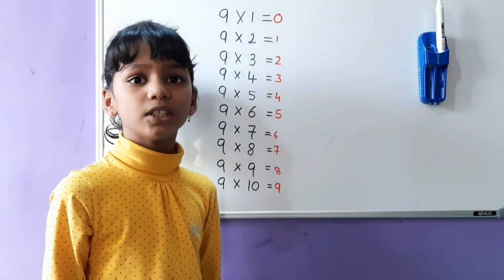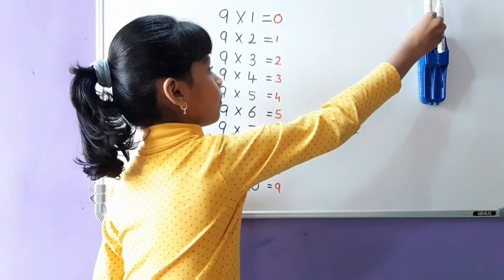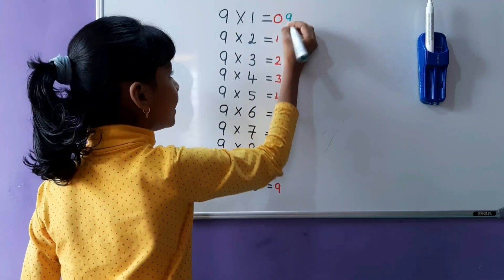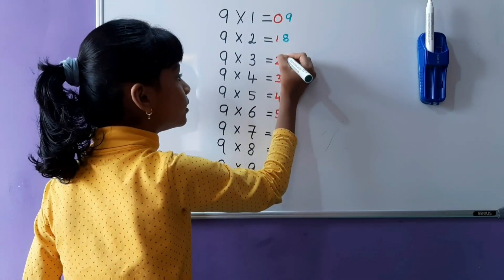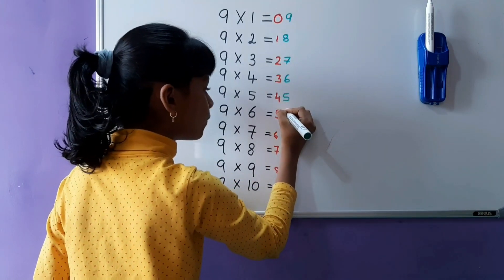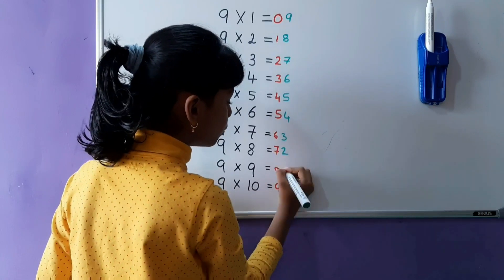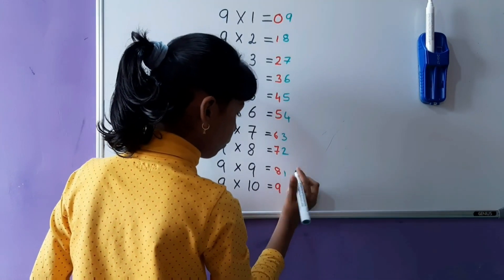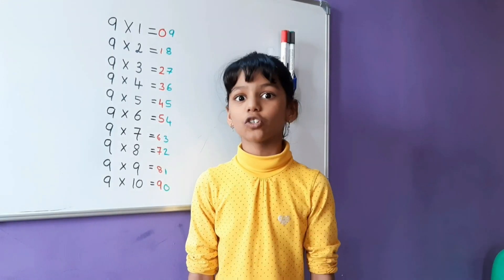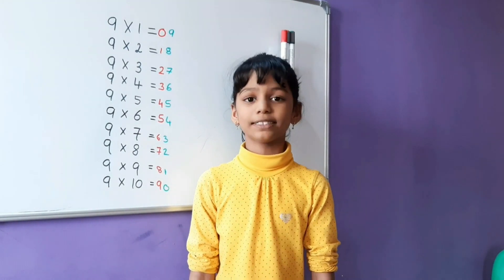Next, try 9 to 0 backward counting: 9, 8, 7, 6, 5, 4, 3, 2, 1, 0. This trick is very useful while writing the 9 times table.